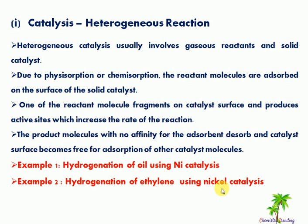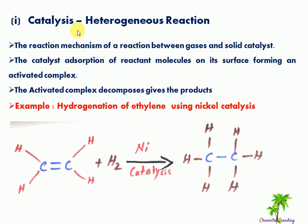Example two: hydrogenation of ethylene using nickel as a catalyst. The mechanism of heterogeneous reactions involves gases and the solid catalyst. First, the catalyst adsorbs the reactant molecules — hydrogen gas is adsorbed. Then the adsorbent reacts with the reactant molecules on the surface, forming an activated complex. The activated complex then decomposes to give the product.